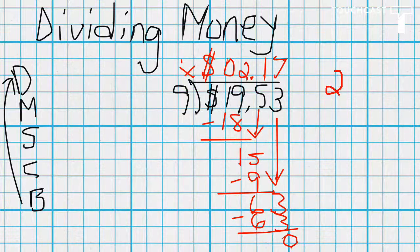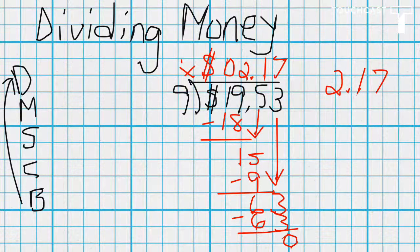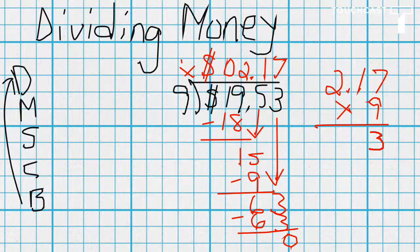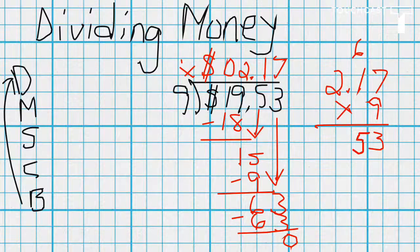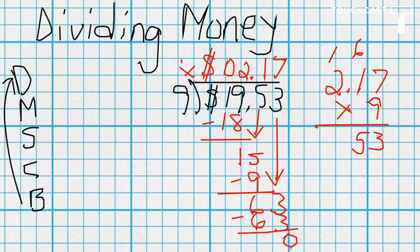We multiply that by nine, so nine times seven is sixty-three, carry the six. Nine times one is nine, plus six is fifteen, carry the one. Nine times two is eighteen, and one is nineteen.